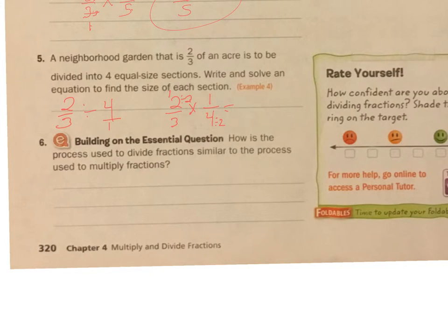2 divided by 2 is 1, 4 divided by 2 is 2. So now I have 1 times 1 equals 1, 3 times 2 is 6. So it is 1 sixth of an acre.